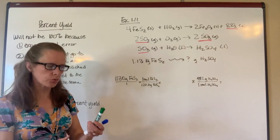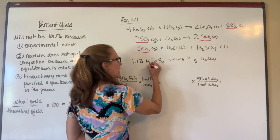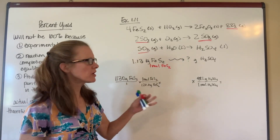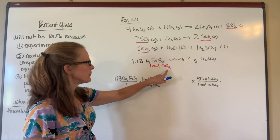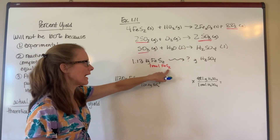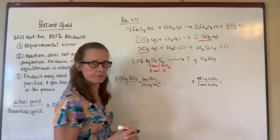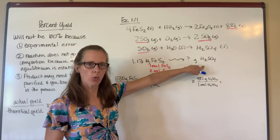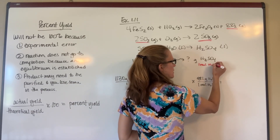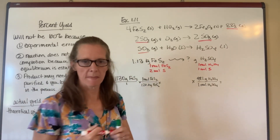If I have one mole of FeS₂, how much sulfur do I have? The coefficients tell me that for every one mole of FeS₂, I have one mole of iron but two moles of sulfur. So one mole of FeS₂ gives me two moles of sulfur. If I look at H₂SO₄, for every one mole of H₂SO₄, that's going to require one mole of sulfur in order to make that.